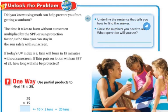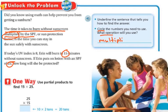First let's underline the sentence that tells us how we're going to find the answer. We need to find out that the time it takes to burn without sunscreen multiplied by the SPF. That's ultimately what we need to do. So what we're going to do is let's circle the numbers that we're going to need to use. We're going to need to know that Erin's going to burn in 15 minutes without the sunscreen, and that if she puts on the SPF of 25. So that's what we're trying to figure out is the 15 and the 25. And what operation are we going to use? They've already said multiplied by. So we do multiplication.